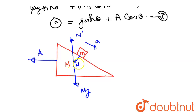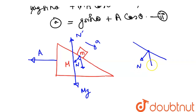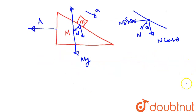For the wedge with acceleration capital A, we identify N, the normal force component, and the reaction. Looking at the block over the wedge: normal force, theta, cos theta. Here we have N sin theta acting on the wedge.